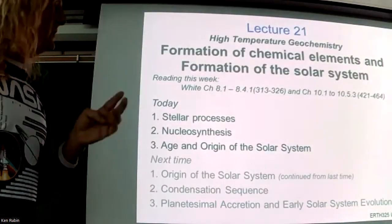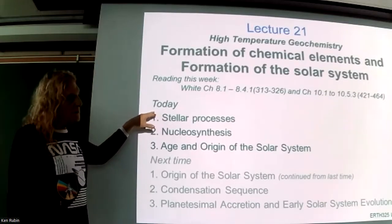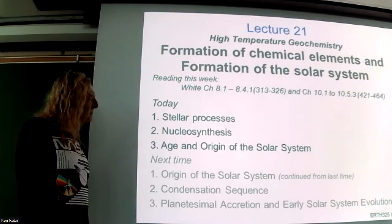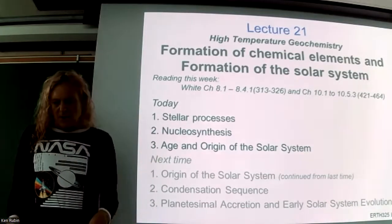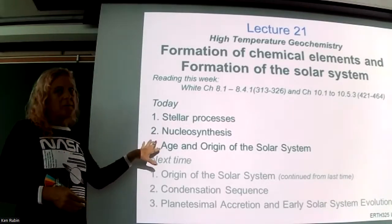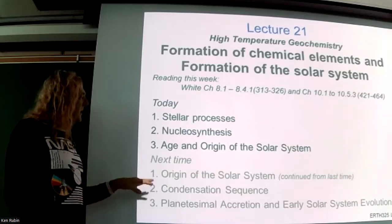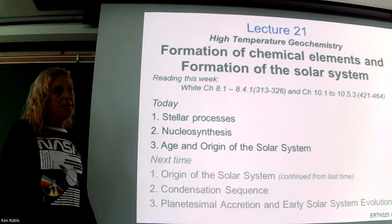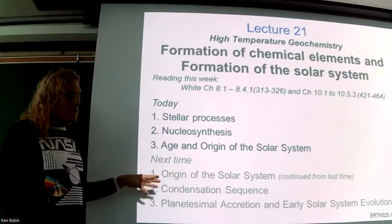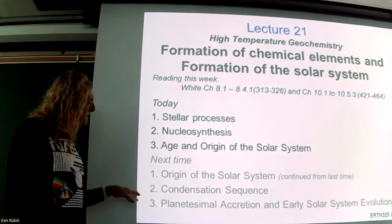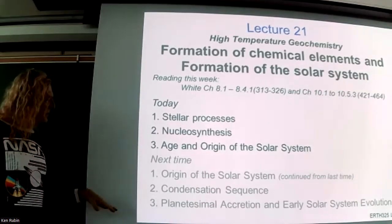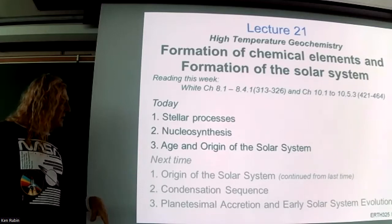Today we'll focus on things that happen in stars and a process called nucleosynthesis — the formation of the periodic chart. Pretty much all the chemical elements we see here on Earth didn't come from our own solar system. Even though we condensed from the same material, they were produced in an earlier generation of stars. Next time we'll continue talking about how solar systems like ours evolve from a gas, including something called the condensation sequence — the process through which material goes from gas phase to solids.